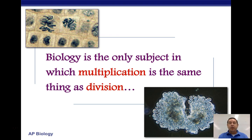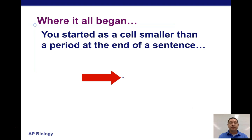Biology is the only subject in which multiplication is the same thing as division. In order to make more living cells or more living things, we have to have cells divide. You started out as a single cell — a fertilized egg, which is one of the largest cells of the body, and it's smaller than the period at the end of a sentence.